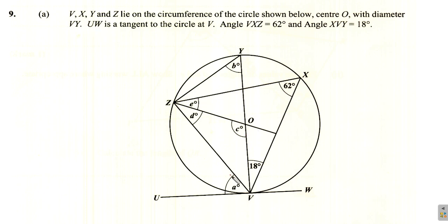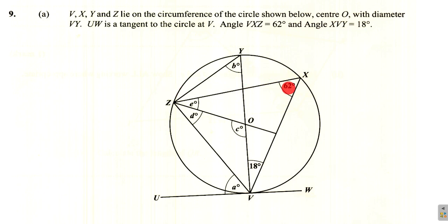UW is a tangential line — a tangent to the circle at V — meaning it's a straight line that touches the circle at V. Angle VXZ is 62 degrees, and angle XVY is 18 degrees.